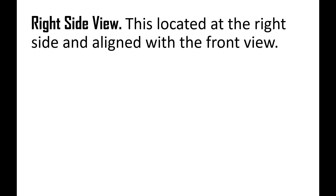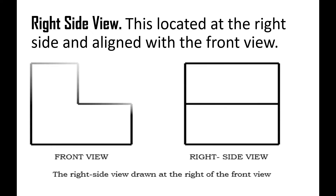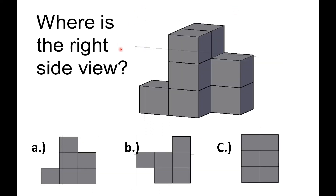For the right side view, it is located at the right side and aligned with the front view. In this picture, this one is our front view, and the right side view is how it looks — drawn at the right side of the front view. Let us answer: where is the right side view of this object — letter A, B, or C? If your answer is letter C, you are correct. Letter A represents the front view, letter B represents the top view, and letter C is the side view, which is the answer. We have one, two, three, four, five, and six blocks, so the answer is letter C.